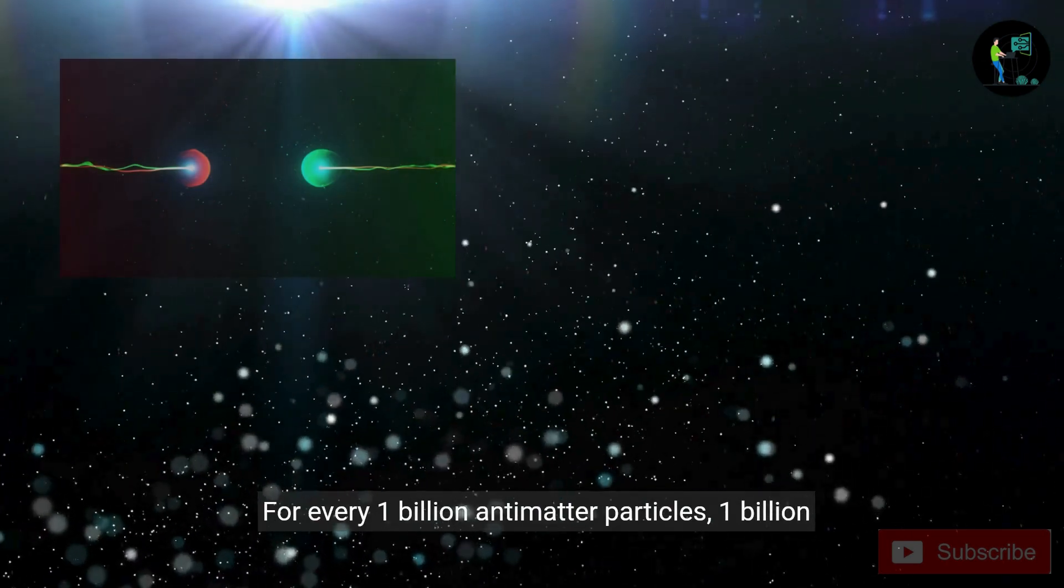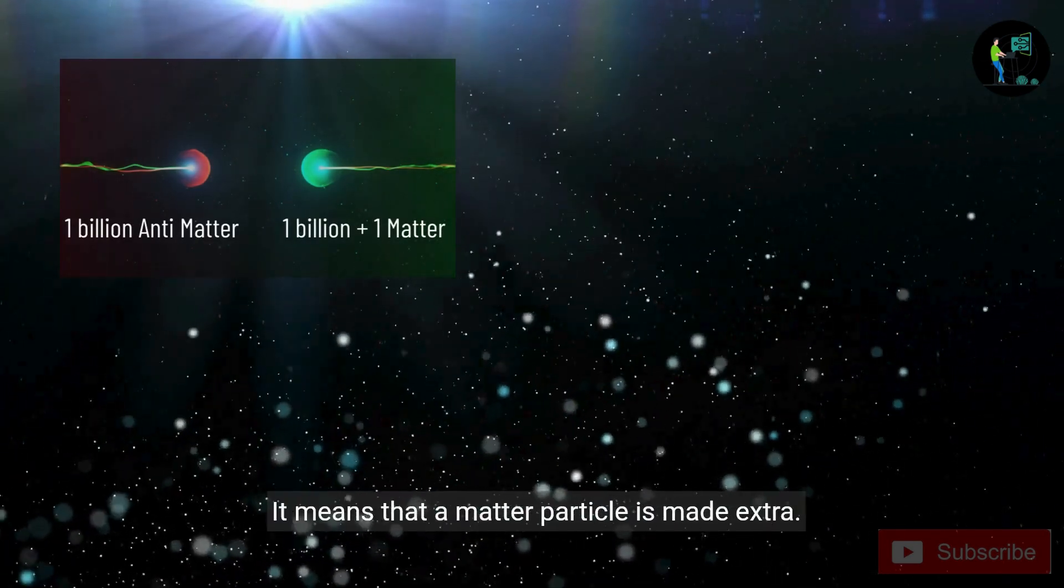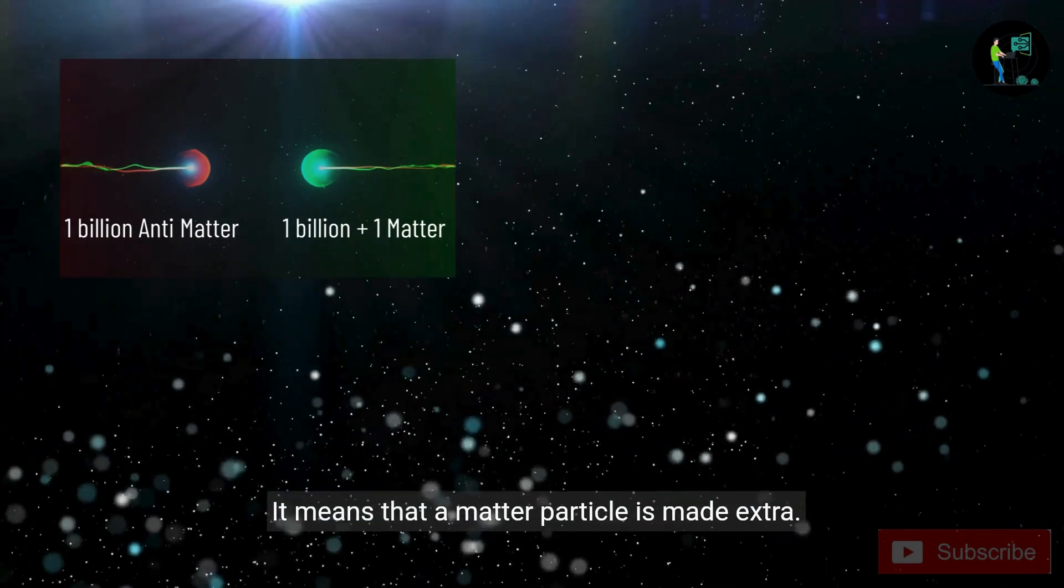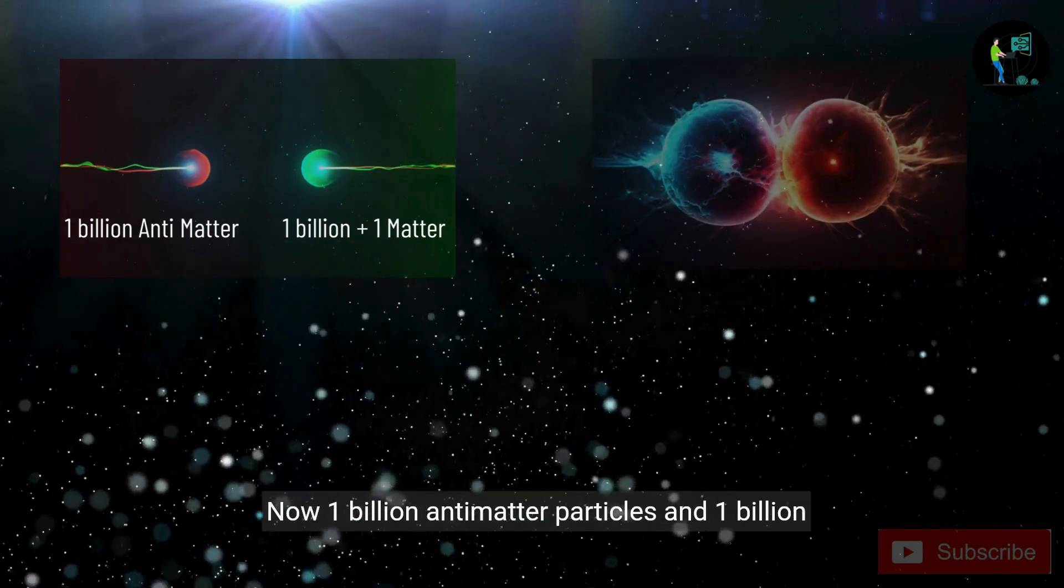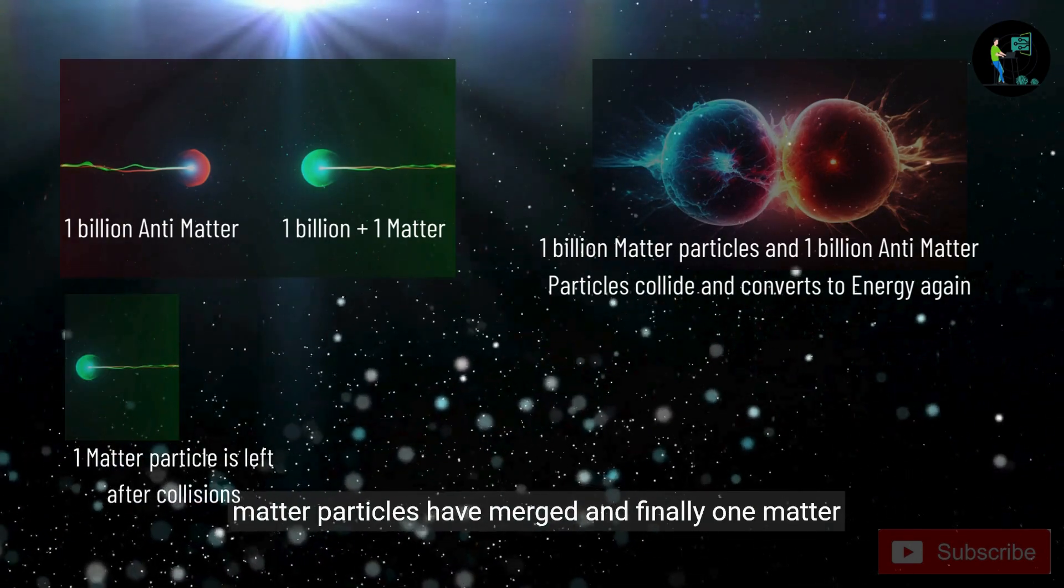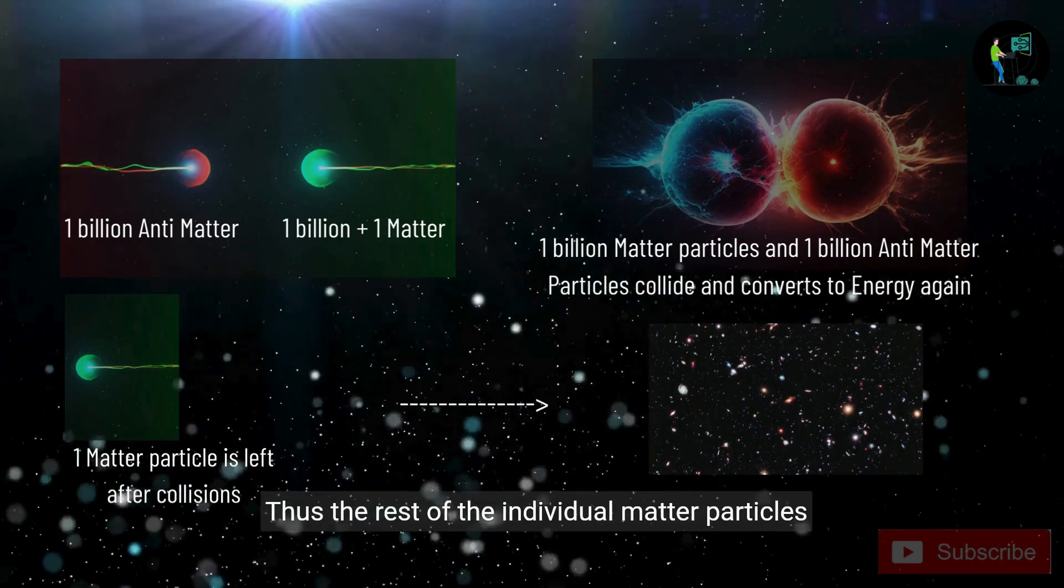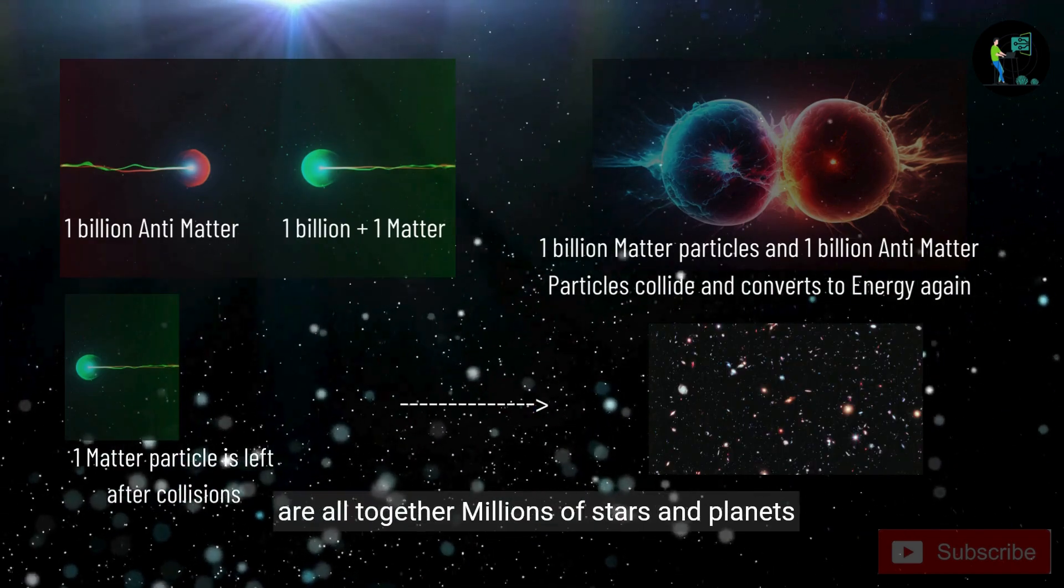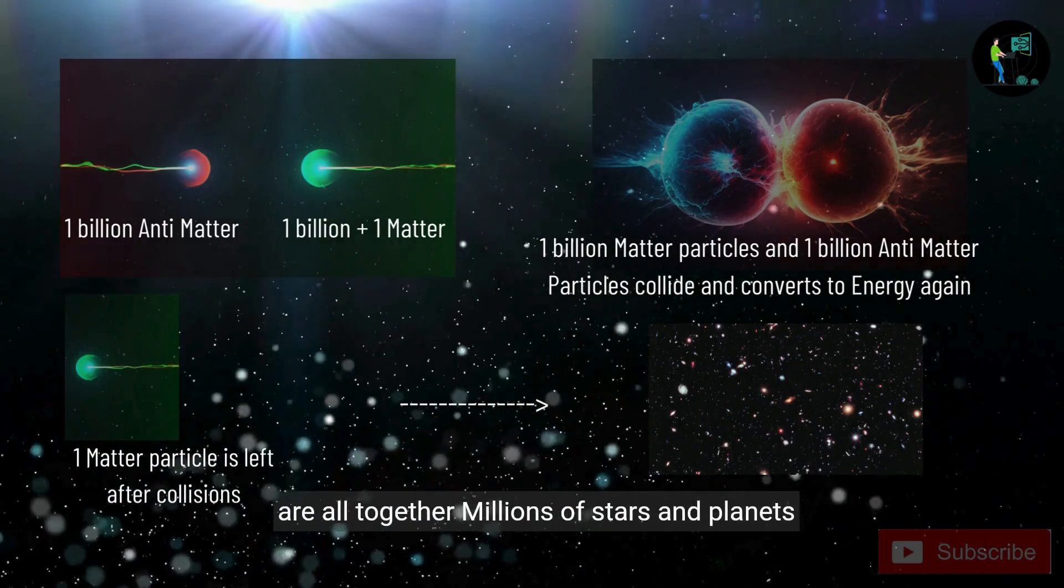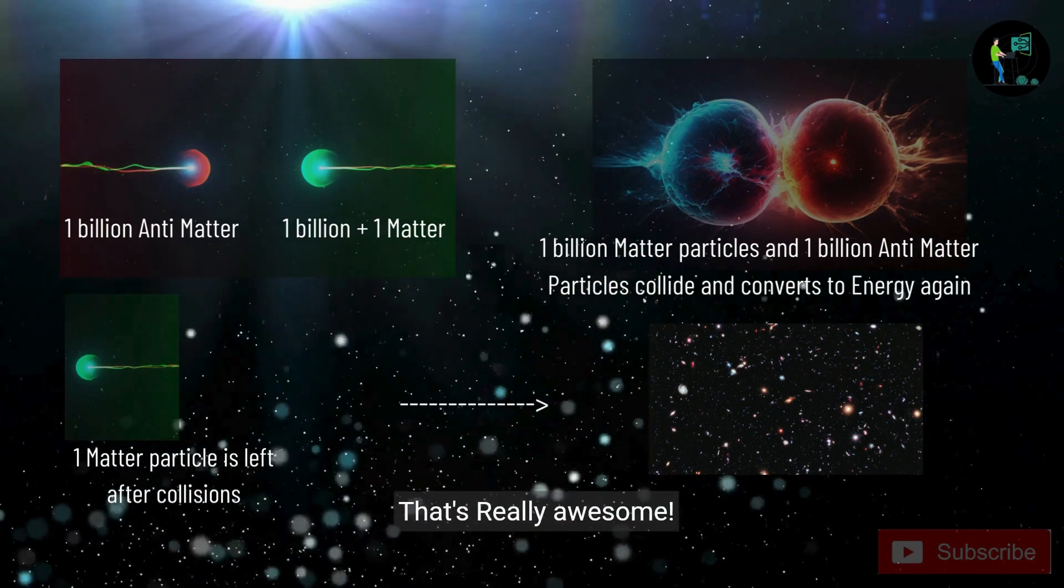For every one billion antimatter particles, one billion and one matter particles are made. It means that a matter particle is made extra. Now one billion antimatter particles and one billion matter particles have merged, and finally one matter particle is left. Thus the rest of the individual matter particles are all together. Millions of stars and planets are formed in this infinite universe. That's really awesome.